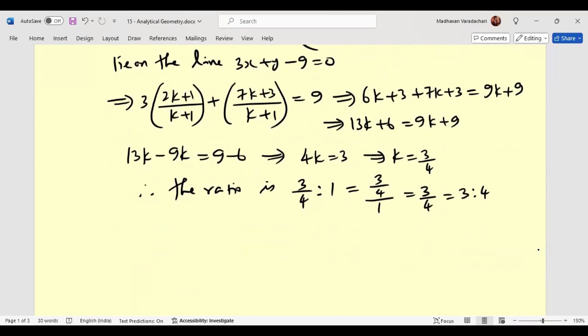Now we will find out the point. Therefore, P will be equal to 2k plus 1, that is 2 times 3 by 4 plus 1 divided by 3 by 4 plus 1. That is our x coordinate. And then y coordinate will be 7 times 3 by 4 plus 3 divided by 3 by 4 plus 1.